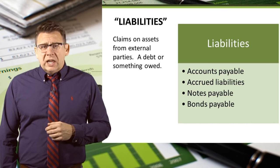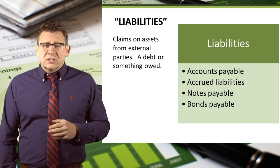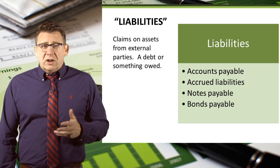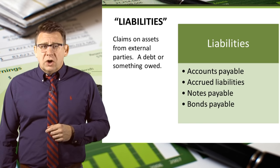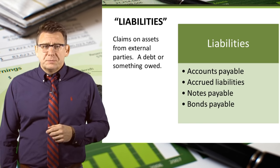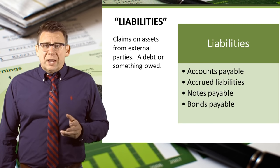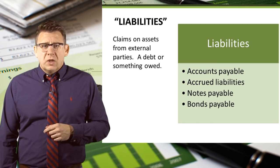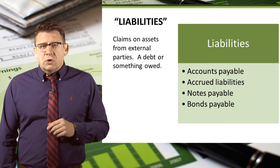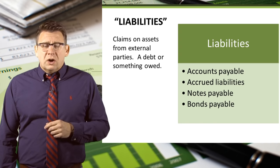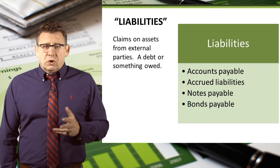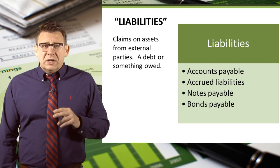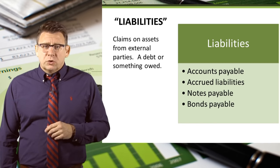Liabilities are claims on our assets from external parties like creditors. Accounts payable is for money that we owe to our vendors or suppliers. Accrued liabilities, sometimes called accrued expenses, are amounts that we owe for our bills related to our operations. For example, utility bills received but not yet paid is a type of accrued liability.